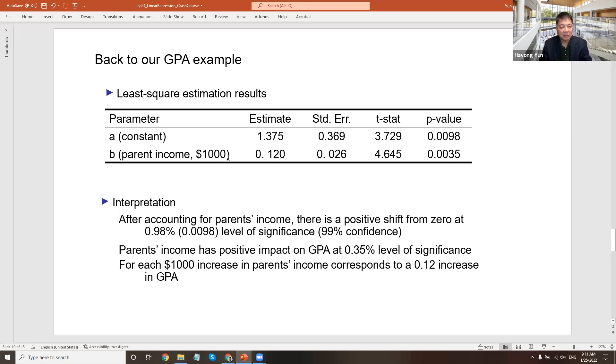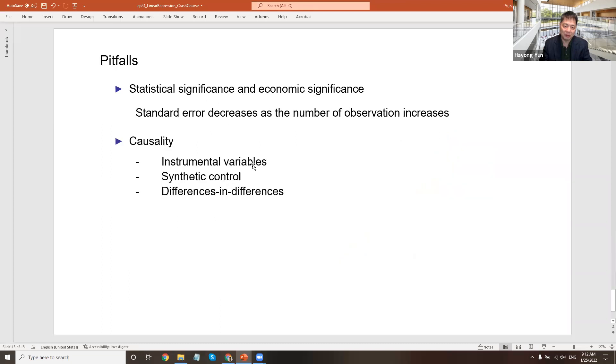But also, there's the other story that the student got a high GPA and parent got happy by this and worked harder and made a lot more money. So it can go also the other way around. The linear regression does not tell which way the direction of this explanation goes.